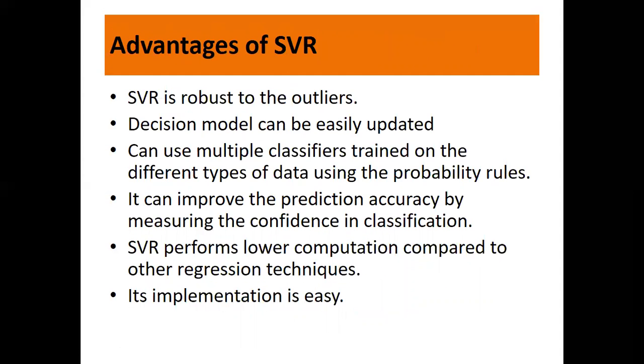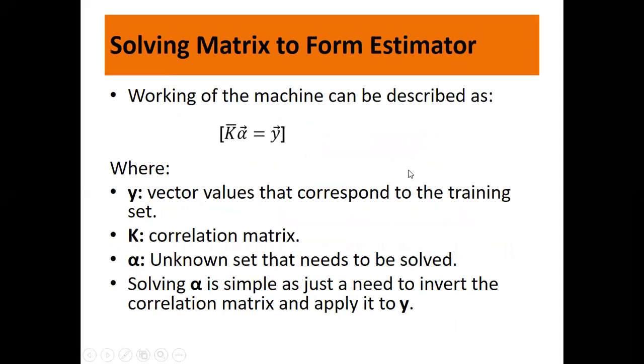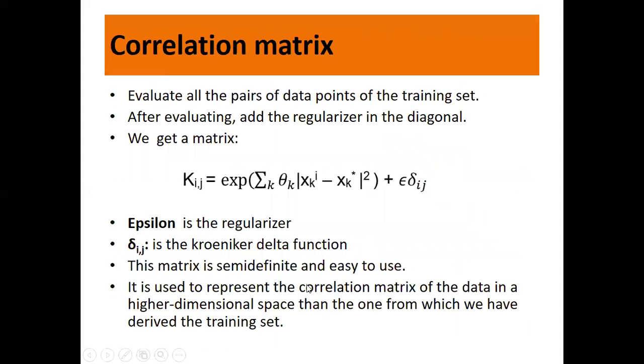Advantages of SVR: It is robust to outliers. Decision model can be easily updated. You can use multiple classifiers trained on different types of data using probability rules. It can improve prediction accuracy by measuring confidence in classification. SVR performs lower computations compared to other regression techniques. Its implementation is easy. In the next session, we'll see how we implement it, so the whole concept will be more clear. When implementing, there are already ready-made functions available in Python which will do this for you.